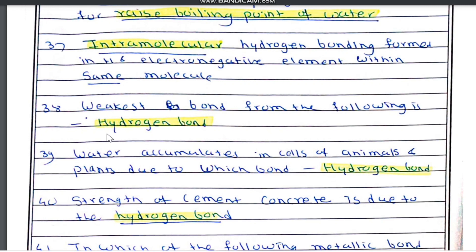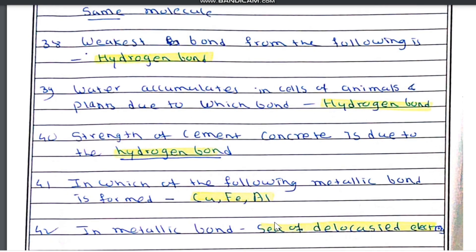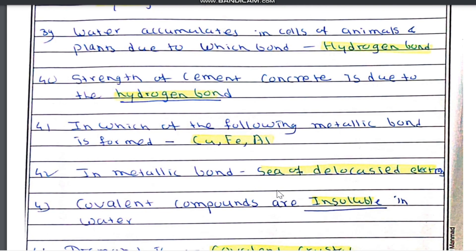The weakest bond from the following is the hydrogen bond. Water accumulates in cells of animals and plants due to the hydrogen bond. The strength of cement concrete is also due to the hydrogen bond. In metals such as copper, iron, aluminium, gold, and silver, metallic bond is present. In metallic bond, a sea of delocalized electrons is present.